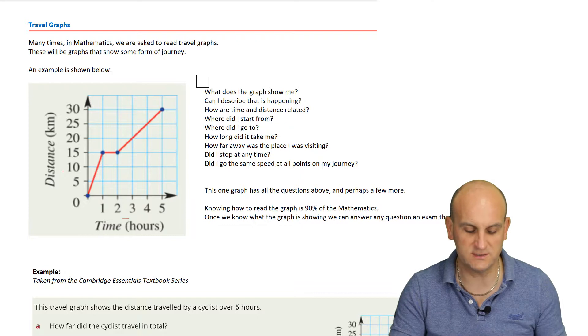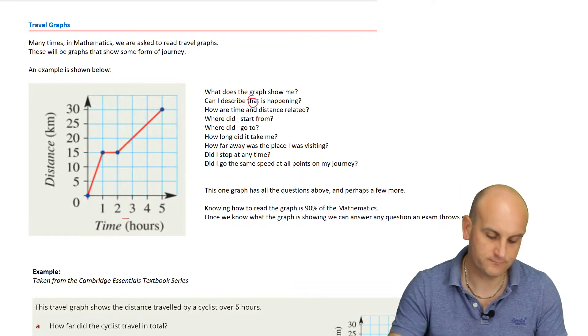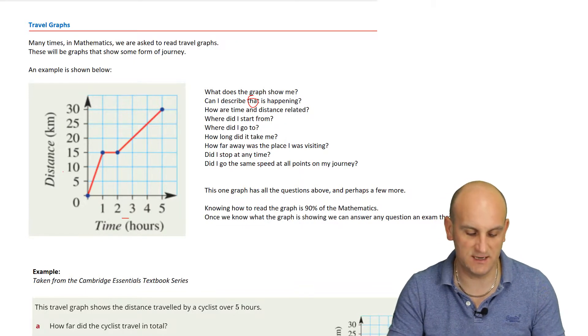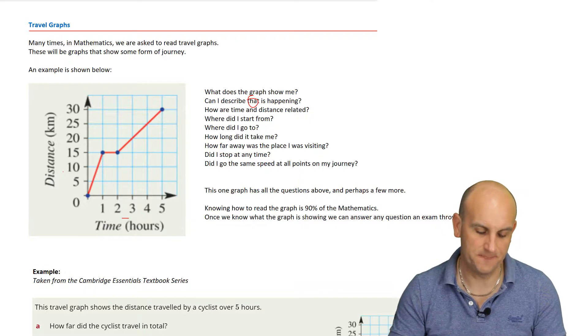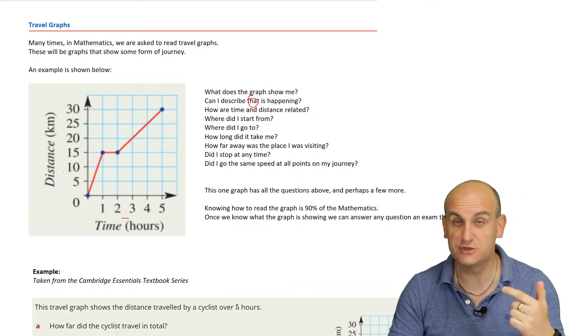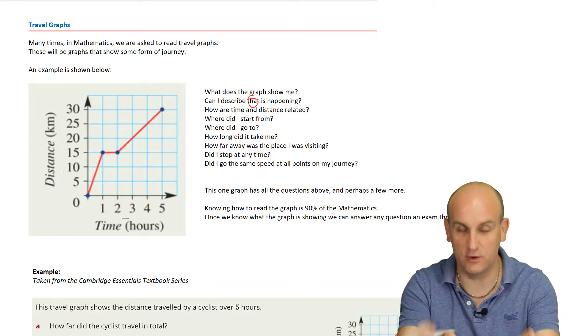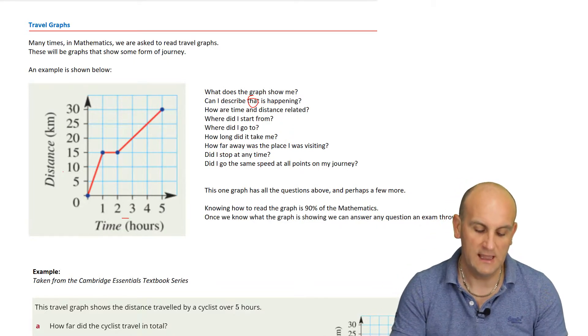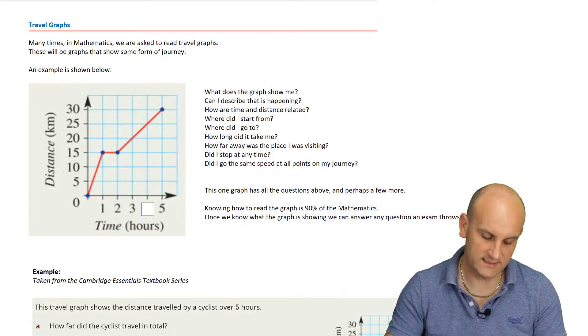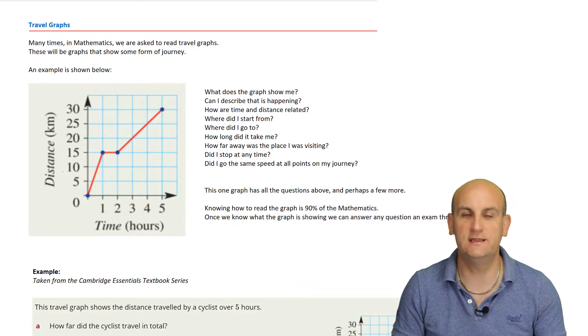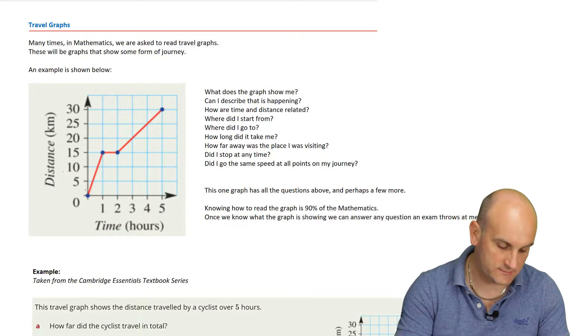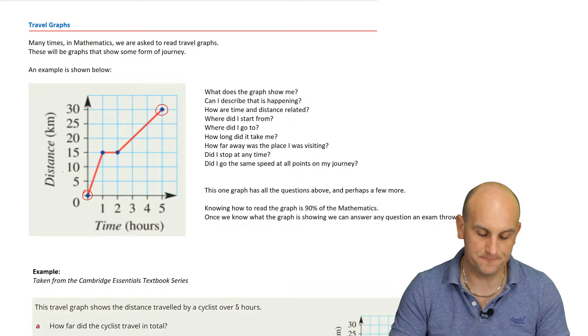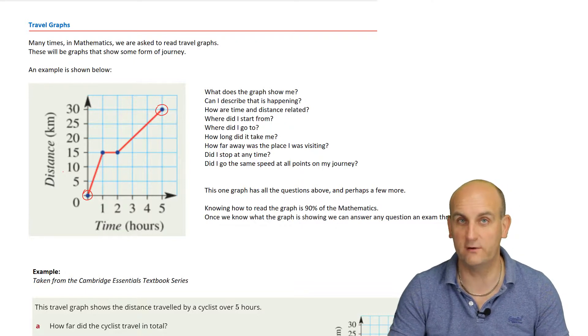So, let's look at the questions that could be asked. What does the graph show me? Can I describe what is happening? How are time and distance related? Where did I start from? Where did I go to? How long did it take me? How far away was the place I was visiting? Did I stop at any time? And that's the biggest trick here. Everyone gets so confused about places I stop. And did I go the same speed for my whole journey? So let's have a look at this then. What does the graph show me? It shows me that I'm going on a journey. I am starting here and I am ending here. That's all I know from that graph at this moment in time.